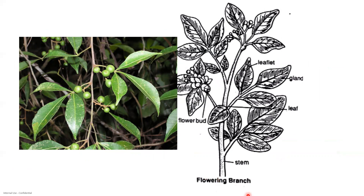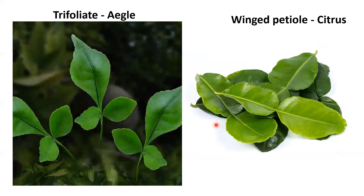You can see a flowering branch here — the leaflet is gland-dotted, though not too clear in this image. The inflorescence is also present with the leaves, cylindrical stem, flower buds, and everything visible.